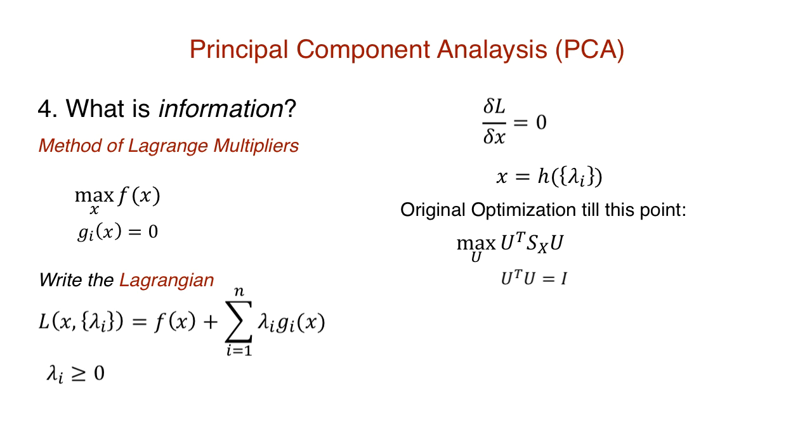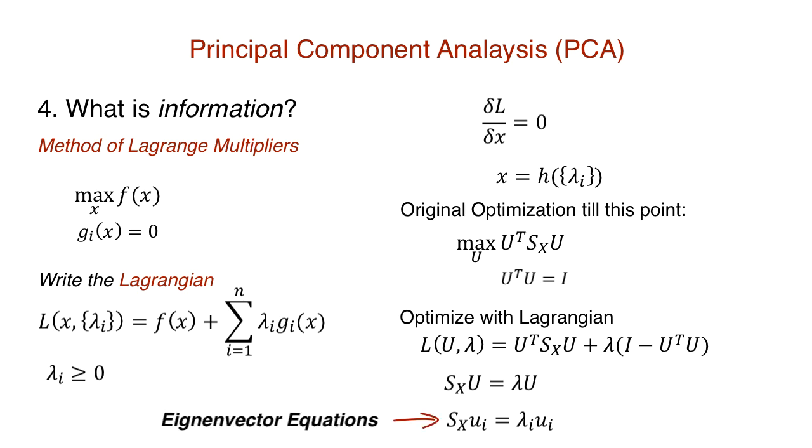Applying this to our current optimization, we introduce lambda as our Lagrange multiplier. Once we differentiate with respect to U and equate to zero, we get a final equation. S x U is equal to lambda U. In matrix equality, the entry on one side is equal to the other, so we have a set of m equations.